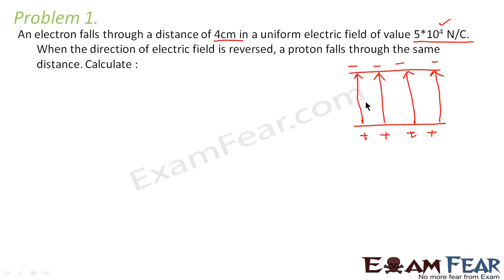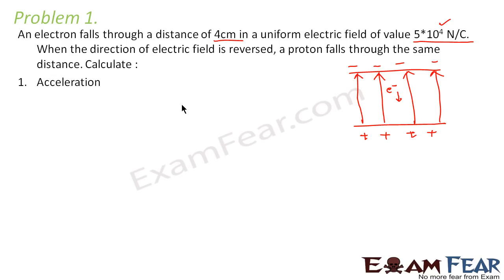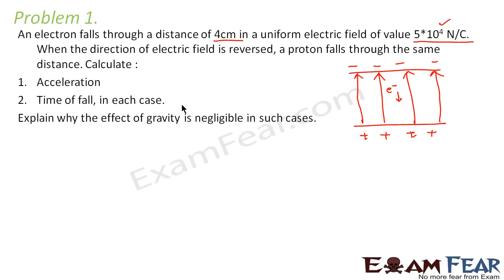An electron falls through a distance of 4 cm. When the direction of the electric field is reversed, a proton falls through the same distance. We have to calculate the acceleration and time of fall in each case, and also explain why the effect of gravity is negligible in such cases.